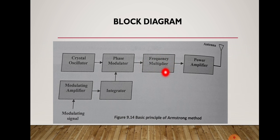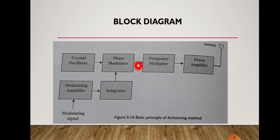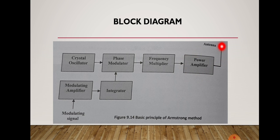By the use of this frequency multiplier, the frequency of the narrow band FM wave is increased. But when we use this multiplier, along with increasing the frequency, it also increases the frequency deviation. As a result, this narrow band FM is converted into wide band FM. Then it is applied to a power amplifier before transmitting through the antenna. The power amplifier increases the power level of the wide band signal, and then it is transmitted through the antenna.